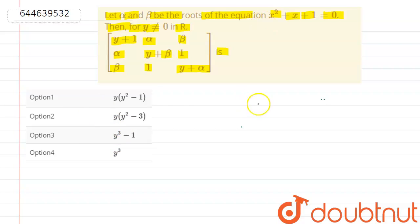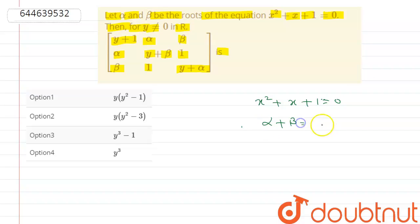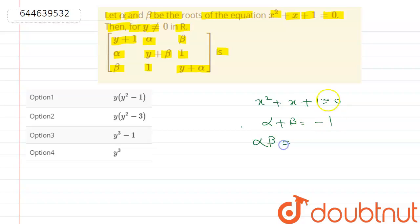It is given that the quadratic equation is x² + x + 1 = 0, and alpha and beta are the roots. We know that the sum of the roots equals -b/a, so alpha + beta = -1/1 = -1. And the product of roots alpha·beta = c/a = 1/1 = 1.